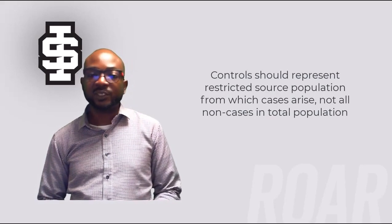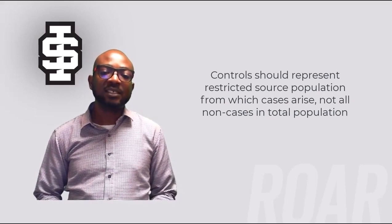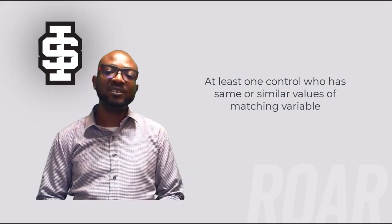Controls should represent the restricted source population from which cases arise, not all known cases in the total population. Matching is used to ensure that controls and cases are similar in variables that may influence the outcome. Matching means that for every case, there is at least one control who has the same or similar values of the matching variable. Matching may be by sex, age, race, ethnic group, or other variables. Matching should be limited to one or more important and strong risk factors; otherwise, it will be difficult to obtain matches for cases. Weak risk factors are not worth considering for matching, as they can be easily evaluated in statistical analysis.